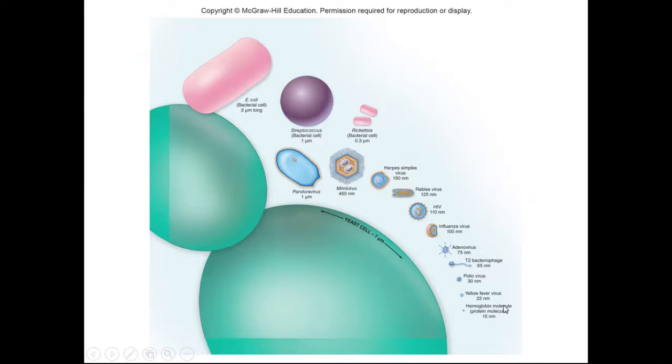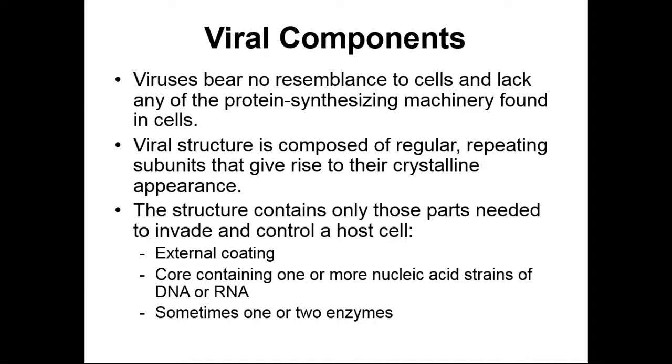If we look at viruses, they can have components that give them structure, form, and function. Our viruses don't bear any strong resemblance to cells. They lack the protein-synthesizing machinery that we have in our cells. They don't have ribosomes, membrane-bound organelles, or any organelles. Viral structure is essentially a suitcase containing some nucleic acid and a delivery system for that nucleic acid with regular repeating subunits. These regular repeating subunits allow you to crystallize viruses and cause them to have a crystalline appearance under an electron microscope.